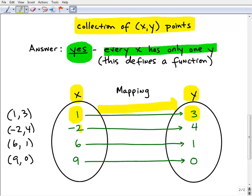Likewise this X, -2, is only paired up with a 4. 6 is only paired up with a 1, and 9 is only paired up with a 0. And that's the definition of a function. Each X is only mapped up with one and only one number.